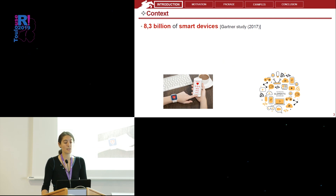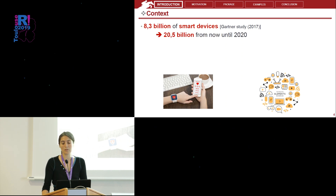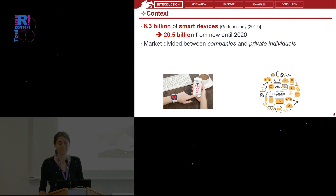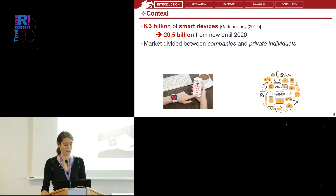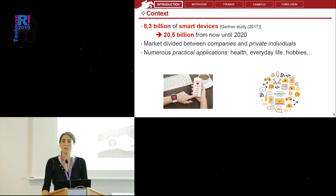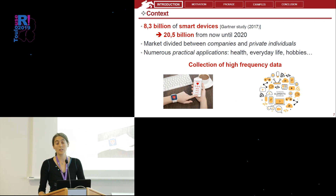In 2007, a Gartner study showed that 8 billion smart devices had been sold and that there would be more than 20 billion by 2020. The market is divided between companies with private solutions like electric connected meters and security cameras, and also numerous practical applications for individuals like health applications, smart houses, and smart watches. All those connected devices collect more and more data and simultaneous variables for one individual, so there is an increasing need for methods to deal with those data.